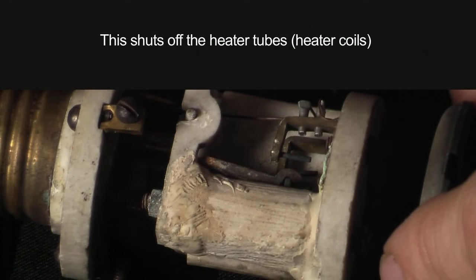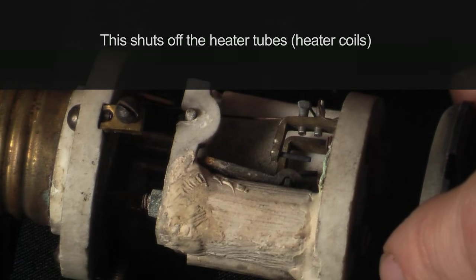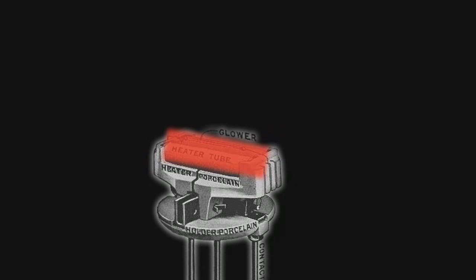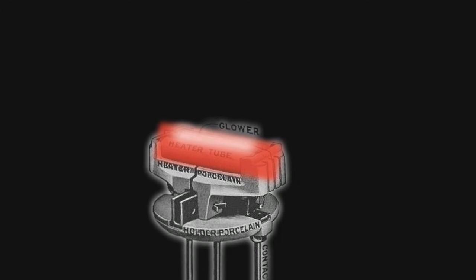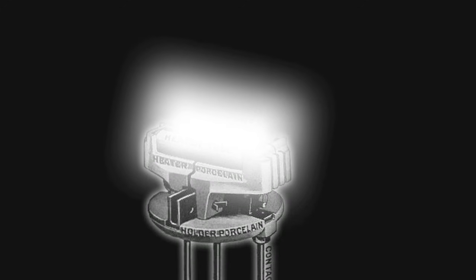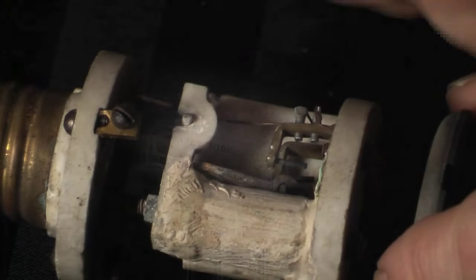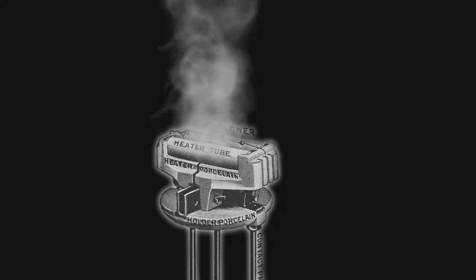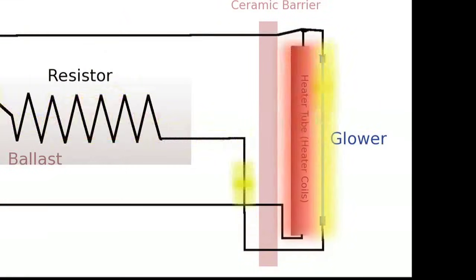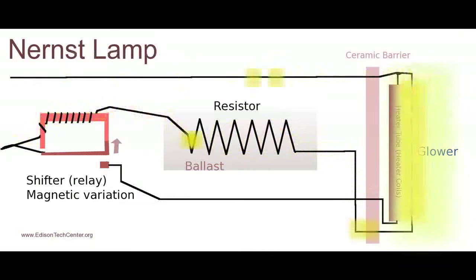So all this was a series resistance in series with the lamp, the Nernst glower, so that when the glower starts, this would shut the heater coils off so that it wouldn't burn up the heater coils. Because the combined heat of the glower and the heater coils together would overheat the heater coils and burn them out quickly. It would also reduce the life of the glower. So they switched off the heater coils once the glower was in operation so that you wouldn't reduce the life of either component.